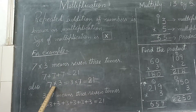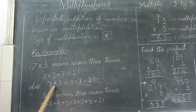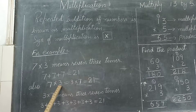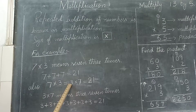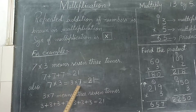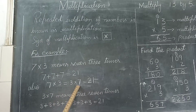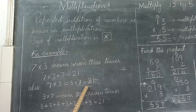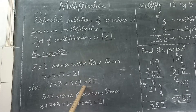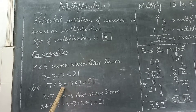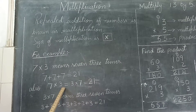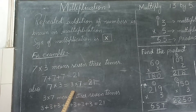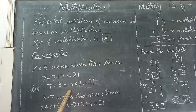Hamari baat proof ho gayi: seven ko multiply three se karein, ya three ko multiply seven se karein, to aapke paas answer twenty one hi aata hai. Students, is property ko commutative property of multiplication bhi kaha jaata hai.